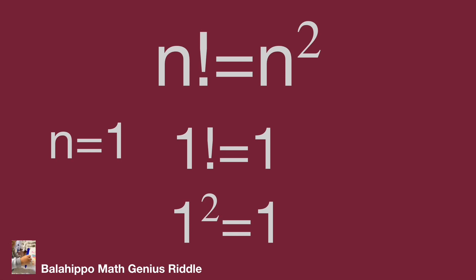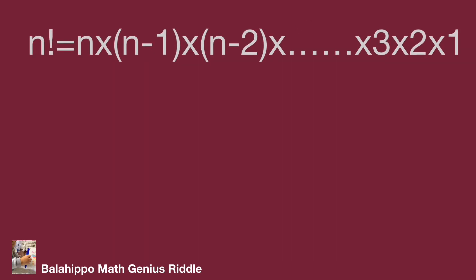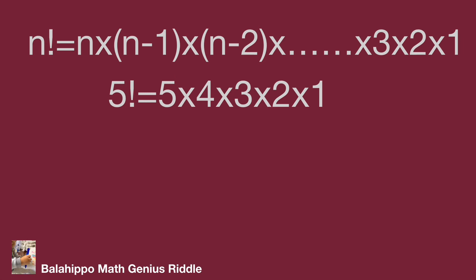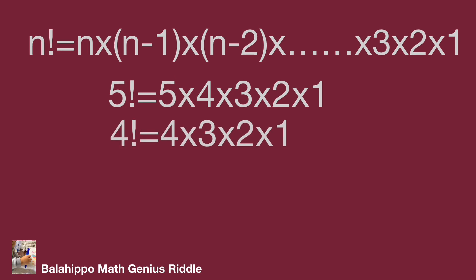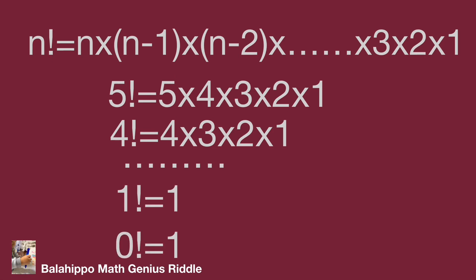How about we go through mathematics and logic thinking to get n from n factorial equal to n squared? First, what is the factorial? n factorial equals n times (n minus 1) times (n minus 2) times ... times 3 times 2 times 1. For example, 5 factorial equals 5 times 4 times 3 times 2 times 1.